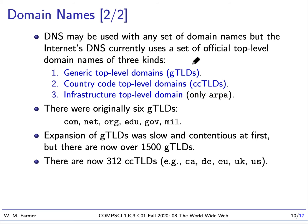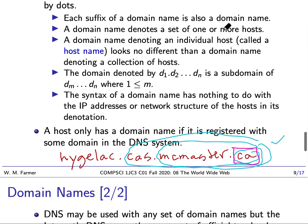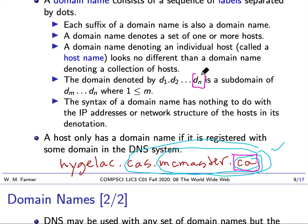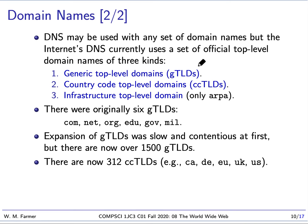There are some particular top-level domain names. The top-level domain name is always the one on the far right. These come in three kinds: generic top-level domain names, country code top-level domain names, and the infrastructure top-level domain called ARPA, which is used for network structural purposes. Originally there were six generic top-level domains: com, net, org, edu, gov, and mil.